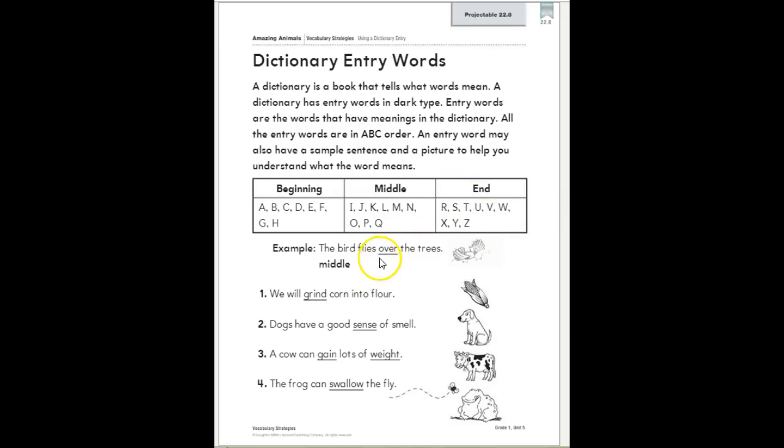In this box up here, they have taken the alphabet and they have split it up into beginning, middle, and end. Here over, starting with the O, find the letter O. That would be in the middle of the dictionary.